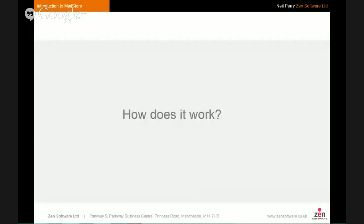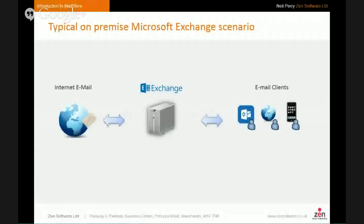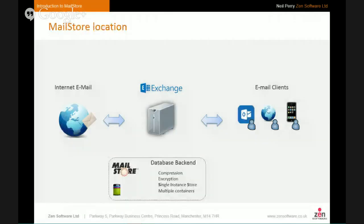Let's look in a bit more detail at exactly how MailStore works. I want to introduce a very typical basic on-premise Exchange scenario where you have an Exchange server on-site connected to the internet, receiving and sending SMTP email, and your email clients — local Outlook users, remote ActiveSync mobile devices, or Outlook Web Access users — are all connecting into Exchange.